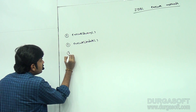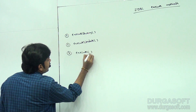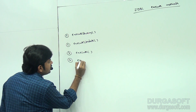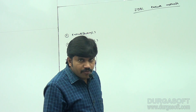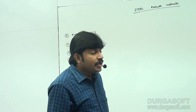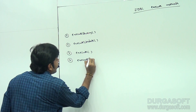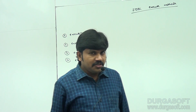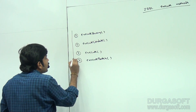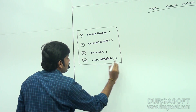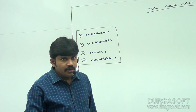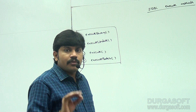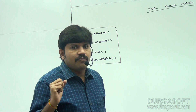The second one is executeUpdate, the third one is execute, and the fourth one is executeBatch. These are the four methods available in JDBC. So in JDBC, how many execute methods are available? Four: executeQuery, executeUpdate, execute, and executeBatch. Let me now briefly talk about these methods.